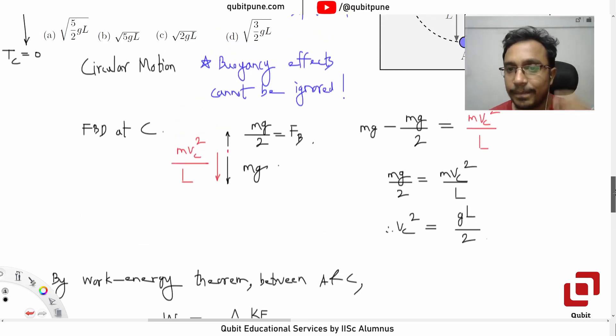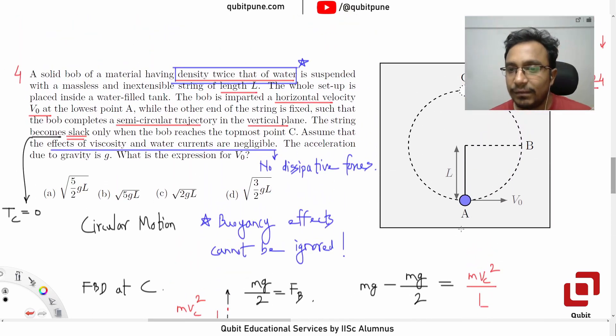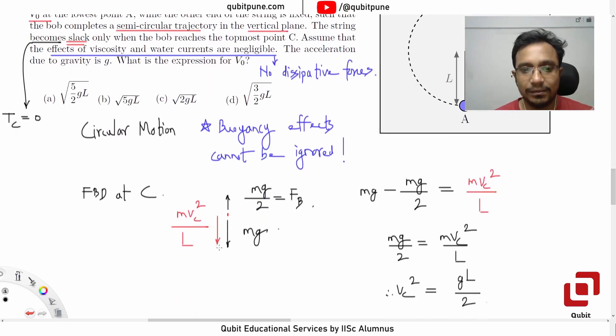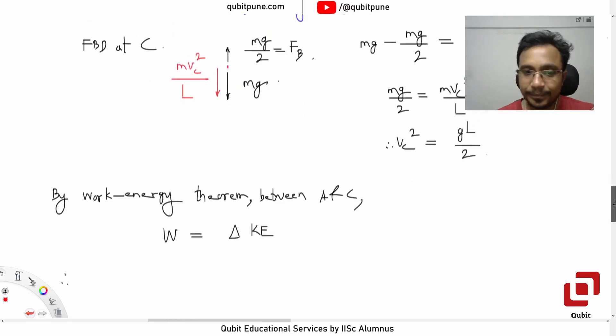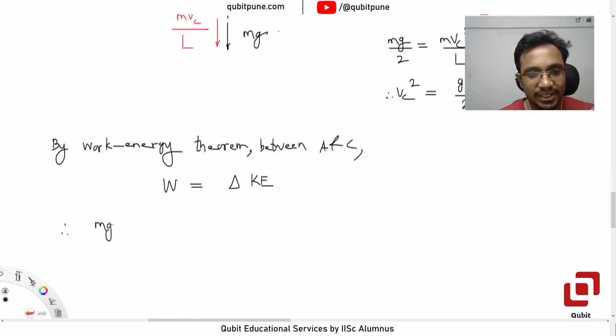Please note that the centripetal force, which is perpendicular to speed at any given instant, is not going to do any work. Both the centripetal force and the tension, because tension is always going to be directed towards the center. Understood. So the forces which are going to do the work are only two: the gravity and the buoyancy force.